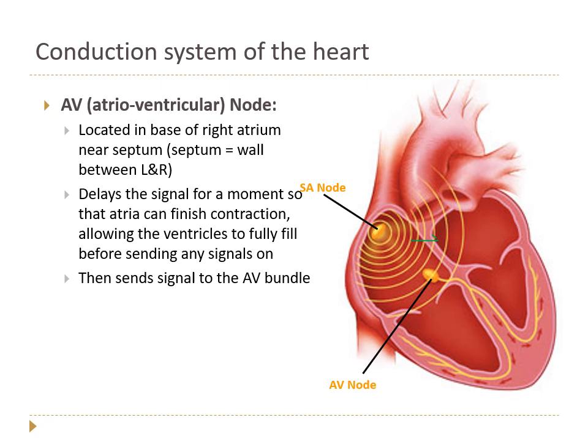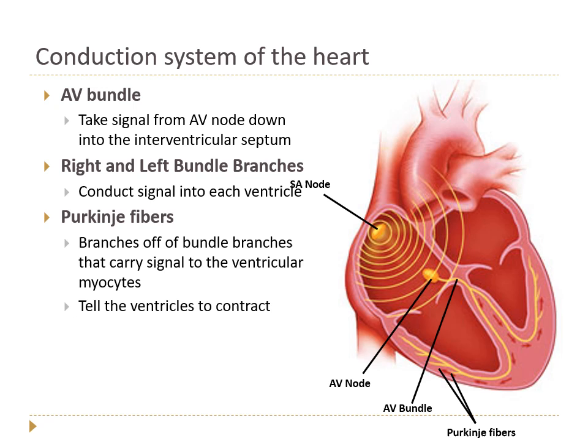From the SA node, this wave of action potentials eventually reaches the AV node — the atrioventricular node — sitting low in the right atrium near the ventricle. The first thing the AV node does is pause the signal. It receives that signal and holds on to it to allow the atria to finish pushing all of the blood into the ventricles. After pausing for a moment, the AV node sends its electrical signal into the next part of the system, which is the AV bundle. Up to this point, everything has been relatively slow, and then there was a pause.